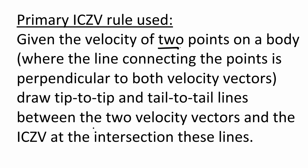Once we have these two velocities and their vectors, we can draw a tip-to-tip and tail-to-tail line between the velocity vectors, tip-to-tip of the velocity vector, tail-to-tail of the velocity vector, and the ICZV turns out to be at the intersection of these two lines. Let's go ahead and demonstrate how this works.